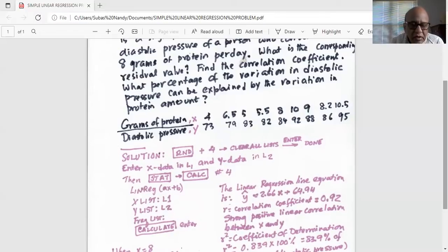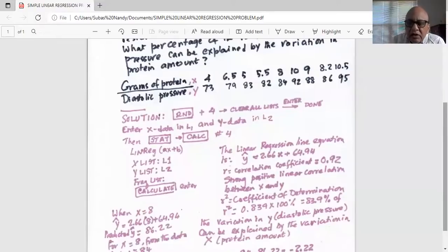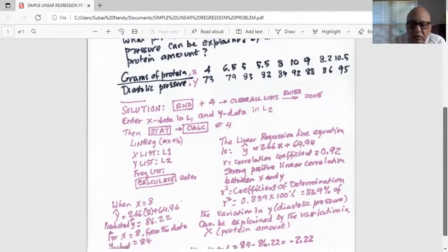Notice the correlation coefficient R value is 0.92, which is a strong positive linear correlation between X and Y. And R squared, the coefficient of determination is given by 0.839. Only for R squared, we multiply it with 100%, which translates it to 83.9% of the variation in Y, which is diastolic pressure, can be explained by variation in X, which is protein amount.